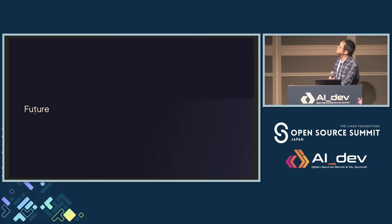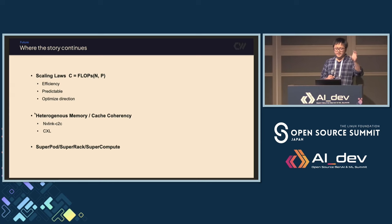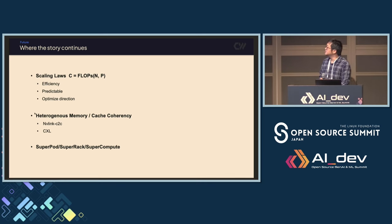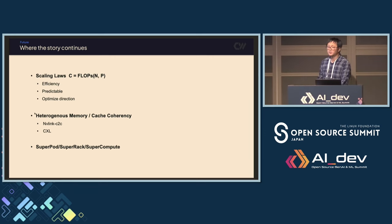From an AI infrastructure perspective, there's also some cool stuff in flight. People want better scaling laws — to predict, given your dataset and model, how many GPUs you need and how big your cluster should be. There's also heterogeneous memory technology: NVLink C2C in GH200, and CXL — new kinds of hardware to support AI infrastructure. And there's the concept of super pods, super racks, or supercomputers — basically making one computer bigger so you can run a larger model with a larger dataset without needing to split it across an entire cluster. These are all interesting directions.